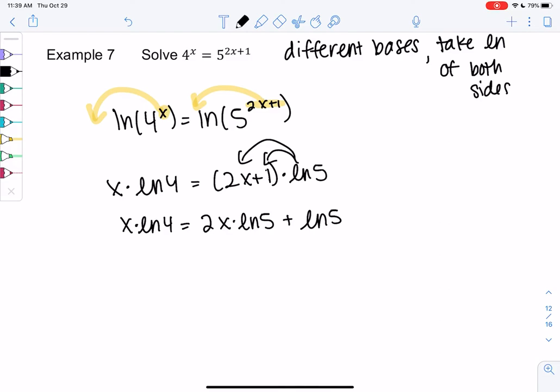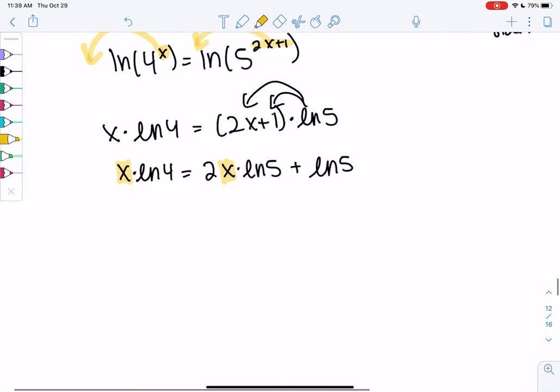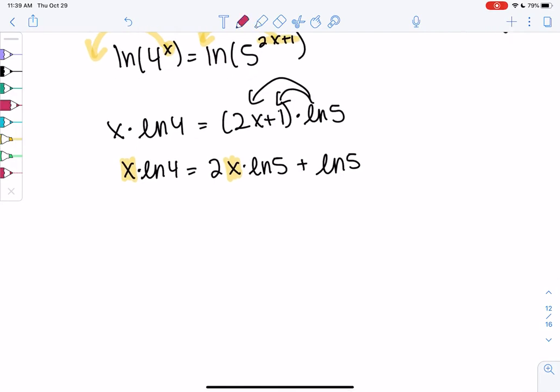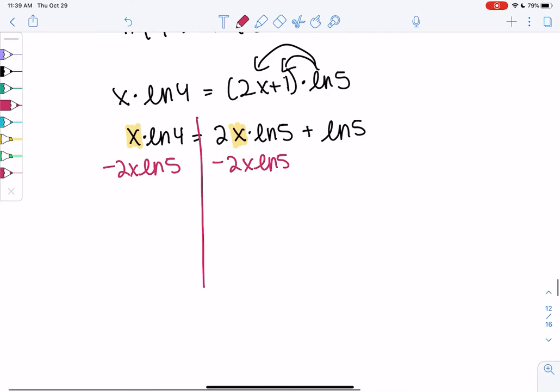And I'm going to get all the x's onto one side. They have ugly coefficients, but it's the same as any linear equation. So I'm going to move 2x ln of 5, minus 2x ln of 5. It's weird, but it's the same as if I had 5x and 4x, just a little uglier looking. So x ln of 4 minus 2x ln of 5 equals ln of 5.